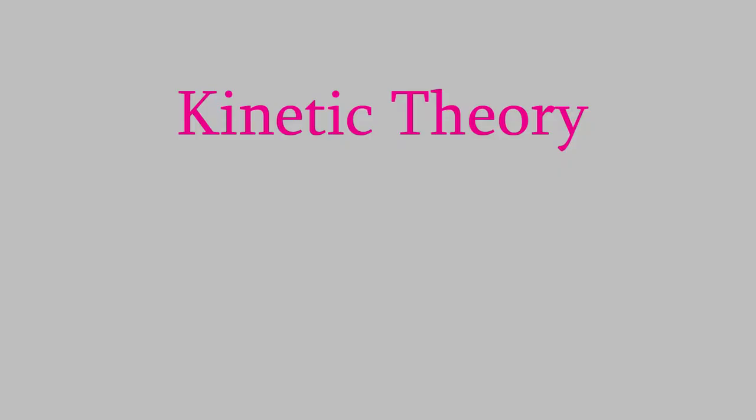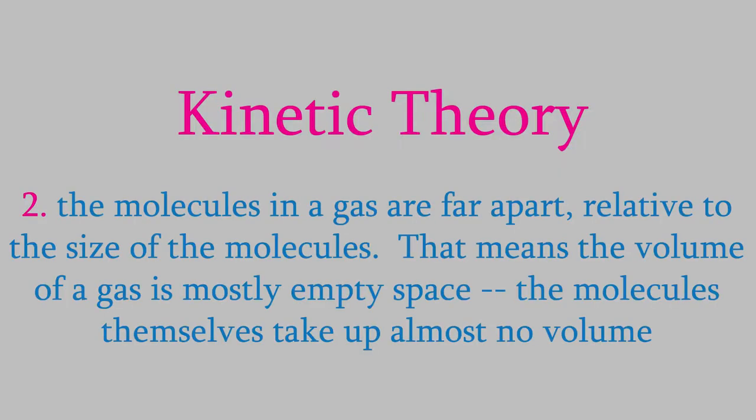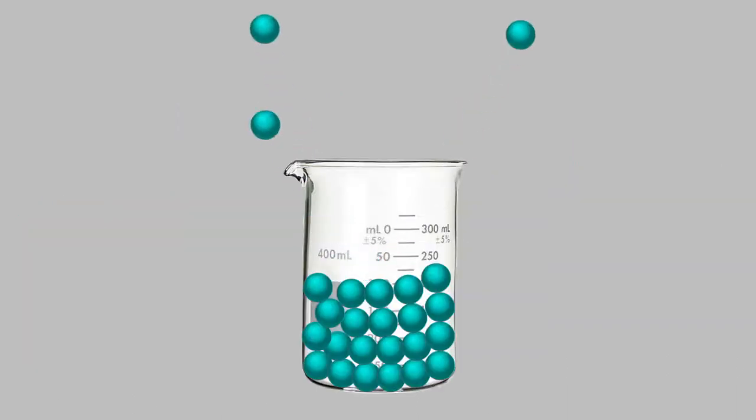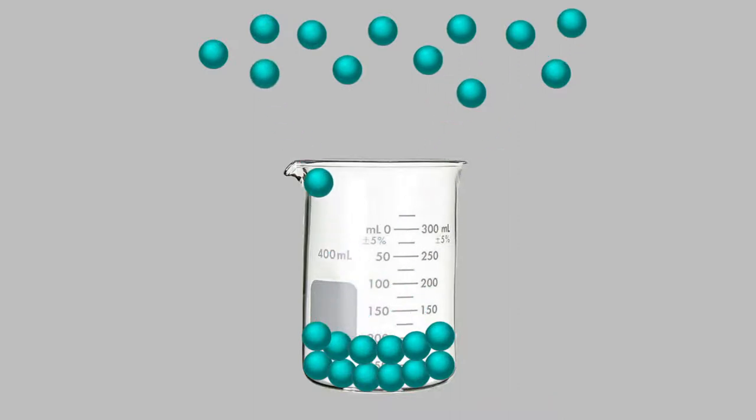The next idea we get from kinetic theory is that the molecules in a gas are far apart from each other relative to the size of the molecules. That means that gases are mostly just empty space. The molecules themselves take up almost no volume. That's why, when you boil just a tiny amount of water, the water vapor can take up a huge volume compared to the liquid you boiled to get it.